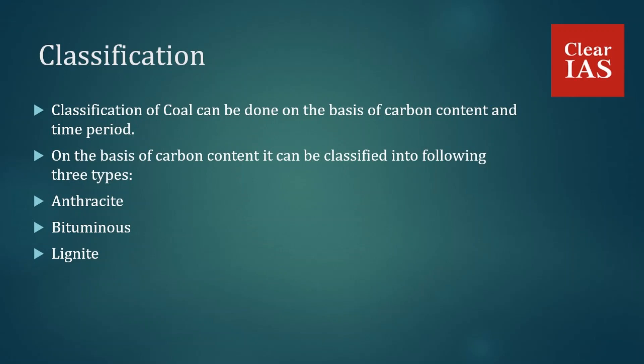On the basis of carbon content, coal is classified into three types. First is anthracite coal — it is the best quality of coal with a high calorific value and carries 80 to 95 percent carbon content. It ignites slowly with a blue flame and is found in small quantities in Jammu and Kashmir.